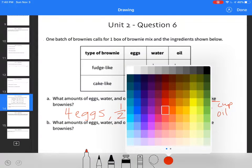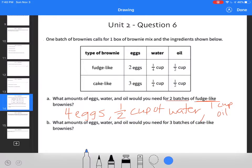If I wanted to make cake-like brownies and I want to make three batches, I'm going to multiply everything by three. So I would need nine eggs.